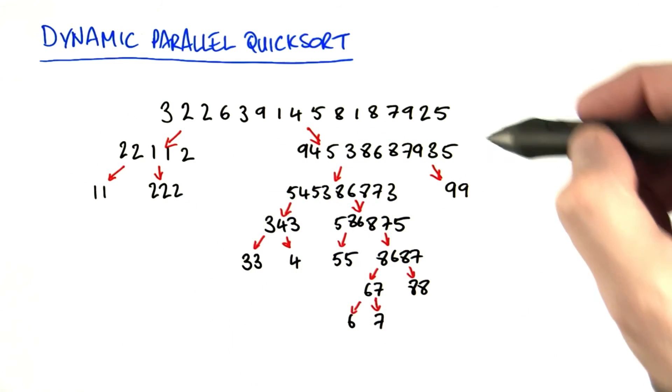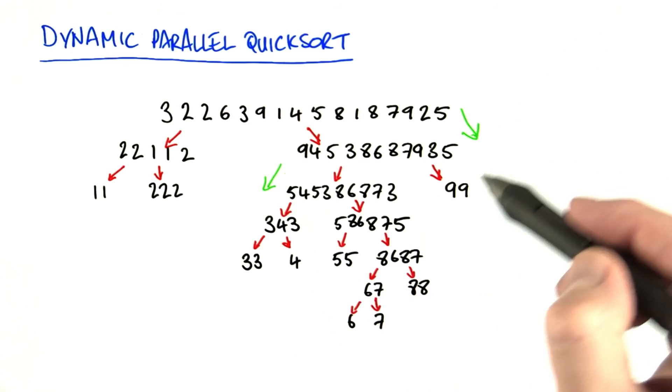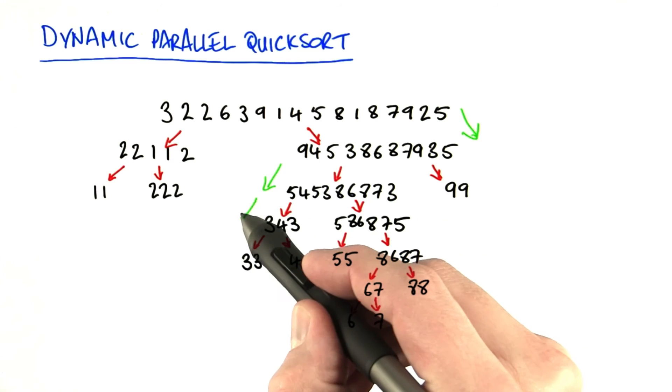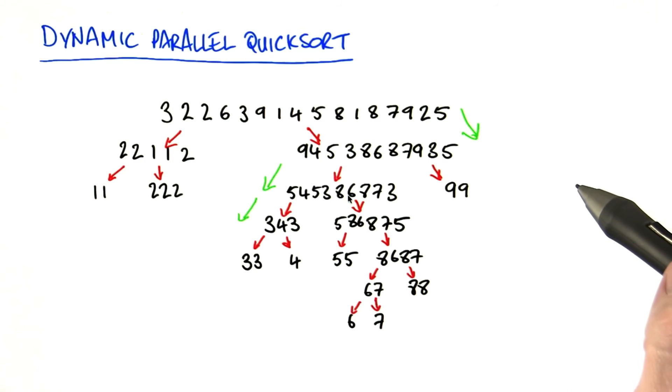Then I would come back and do the right-hand side next, and then so on. And so what we would see is that each step gets run sequentially instead of in parallel, which defeats the purpose of the parallel sort.